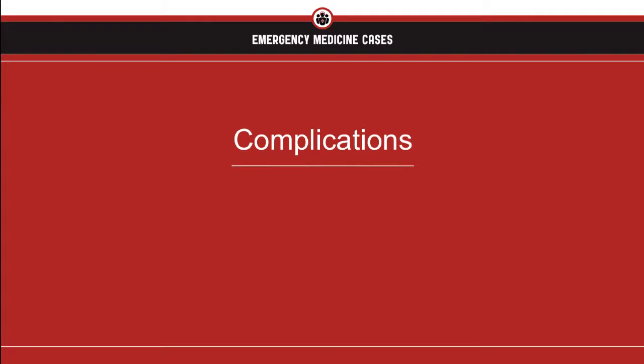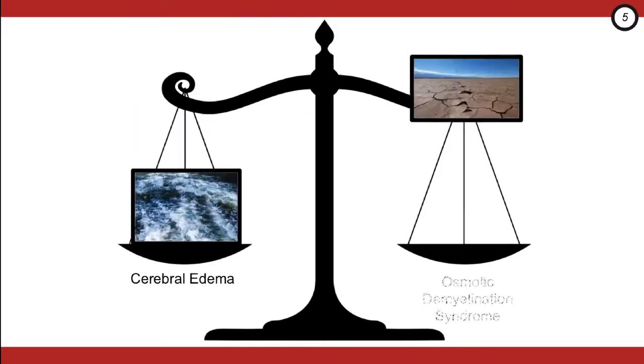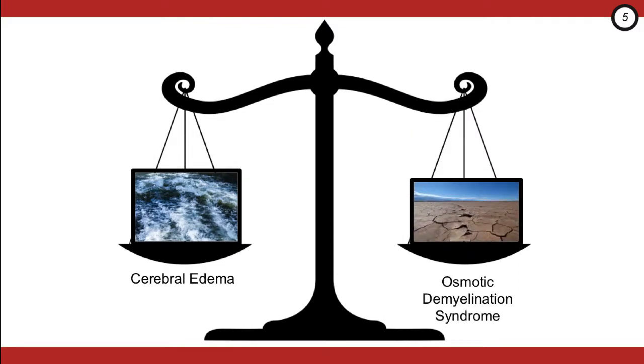So what are those complications that we're talking about? Mortality from hyponatremia comes from two main complications: cerebral edema and osmotic demyelination syndrome. Cerebral edema is a result of undercorrection of the sodium, and overcorrection leads to osmotic demyelination syndrome. It is a balance, and one that our five core principles strives to maintain.